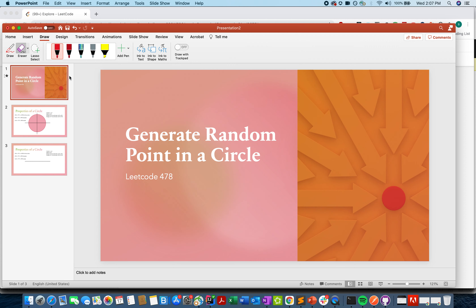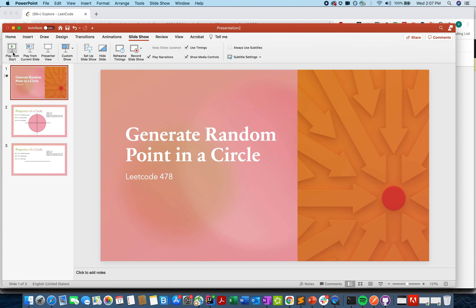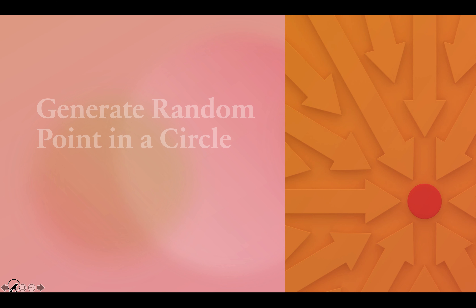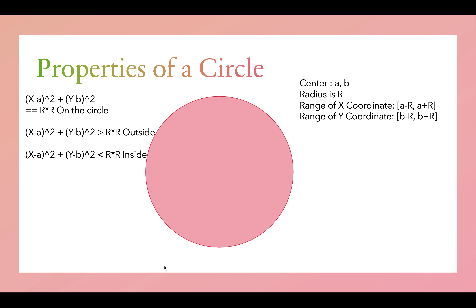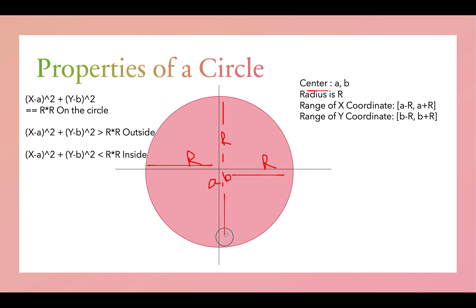Moving on to the algorithmic part — let me use the slideshow I've created. Before jumping into the details, let's understand a few properties of a circle. The center of the circle is (a, b), where a is the x-coordinate and b is the y-coordinate, and the radius is r. So all four extreme lengths from the center to the boundary equal r.